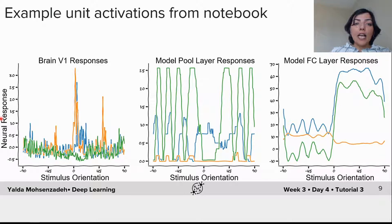In this slide you can see the activations of neurons in brain region V1 and activations of units in model pooling layer and activations of units in model fully connected layer. As you see, brain neurons in region V1 show selectivity to some specific orientation.